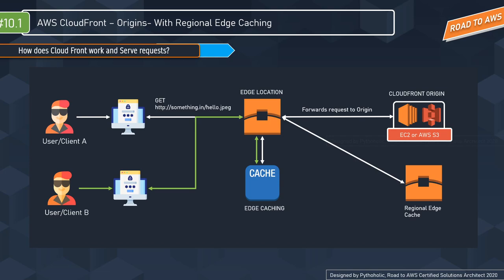If you request an object, CloudFront first checks for the file in the edge location cache. If cached, it comes back directly. If not, it checks the regional edge cache. If found there, the content is served. If not, CloudFront reaches out to the origin. With a CDN, you don't talk directly to the origin — you communicate via the proxy server at the edge location. Content gets cached in the local edge cache and also at the regional edge cache for a longer period.